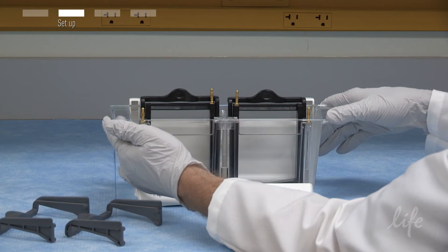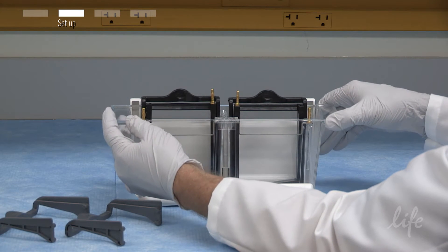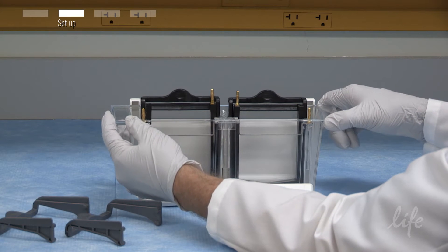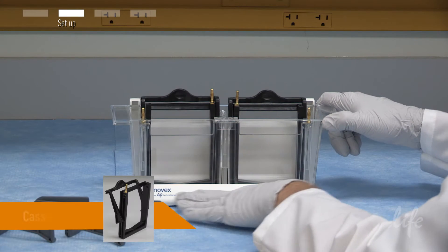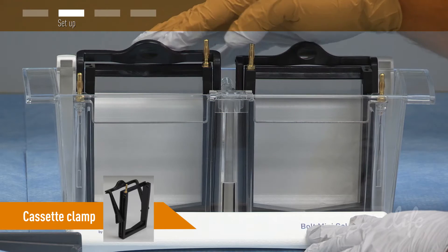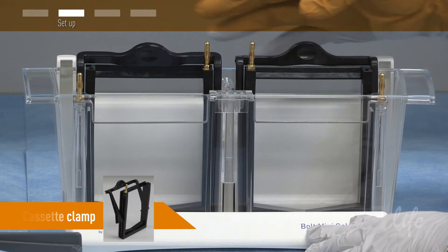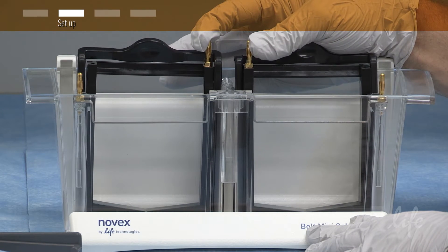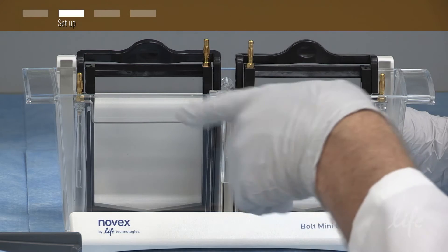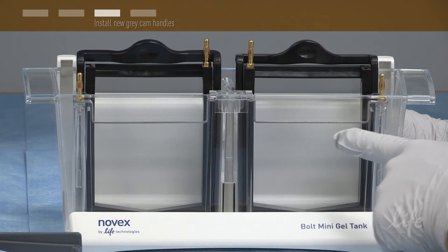Check the assembly of the Bolt mini gel tank by making sure that the electrophoresis tank is secure in the base and that the cassette clamps are in place. Anode connectors should be positioned in the middle of the tank. The front of the tank with the cathodes should be facing towards you.